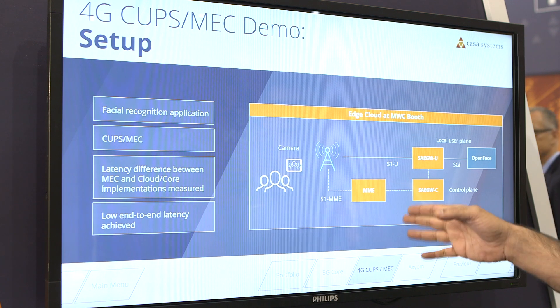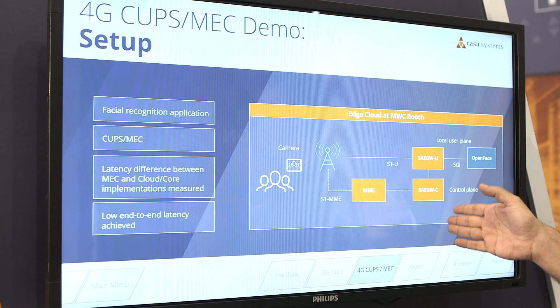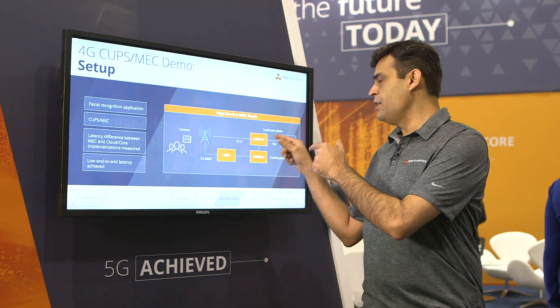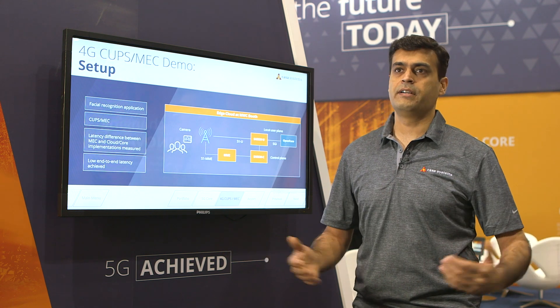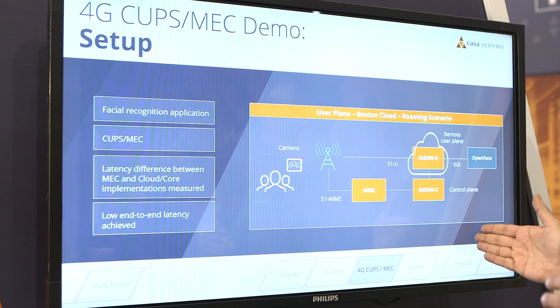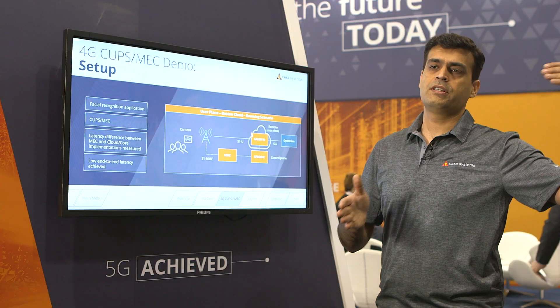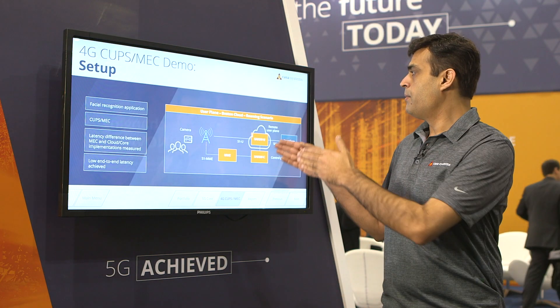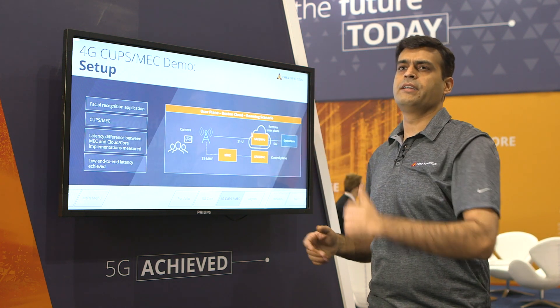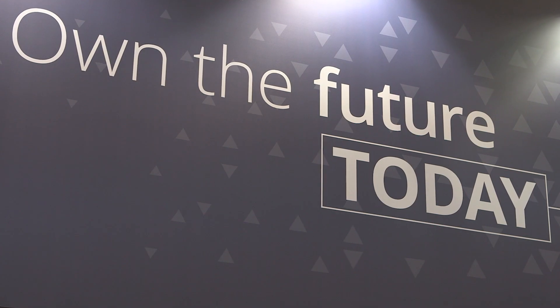A little bit more about the architecture: we have the MME and the SAE gateway, which is a combination of S-gateway and P-gateway. The control plane and user plane have been implemented on our servers here at this event. The MME and S-gateway control plane can also reside in the cloud, which is configured in Andover. For this demo, the user plane in Andover connects to the other radio as well.